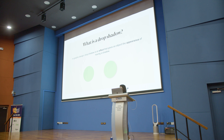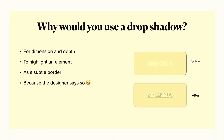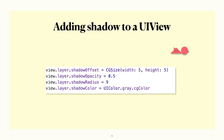So what is a shadow? A shadow is an effect that gives your elements an appearance of having a shadow. It adds some dimension and depth. It can also be very useful to highlight an element, especially if the background color is clashing with your element's color. And of course, sometimes you just want to add it because your very friendly designer has asked you to add it. So how do you do it? Pretty straightforward — you just set these four properties: offset, opacity, radius, and color, and you should be all set.